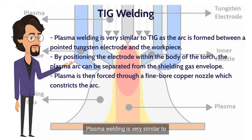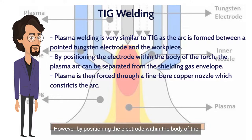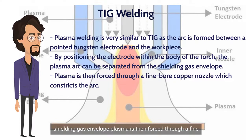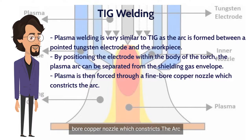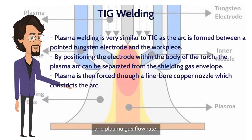Plasma welding is very similar to TIG, as the arc is formed between a pointed tungsten electrode and the workpiece. However, by positioning the electrode within the body of the torch, the plasma arc can be separated from the shielding gas envelope. Plasma is then forced through a fine bore copper nozzle which constricts the arc. Three operating modes can be produced by varying bore diameter and plasma gas flow rate.